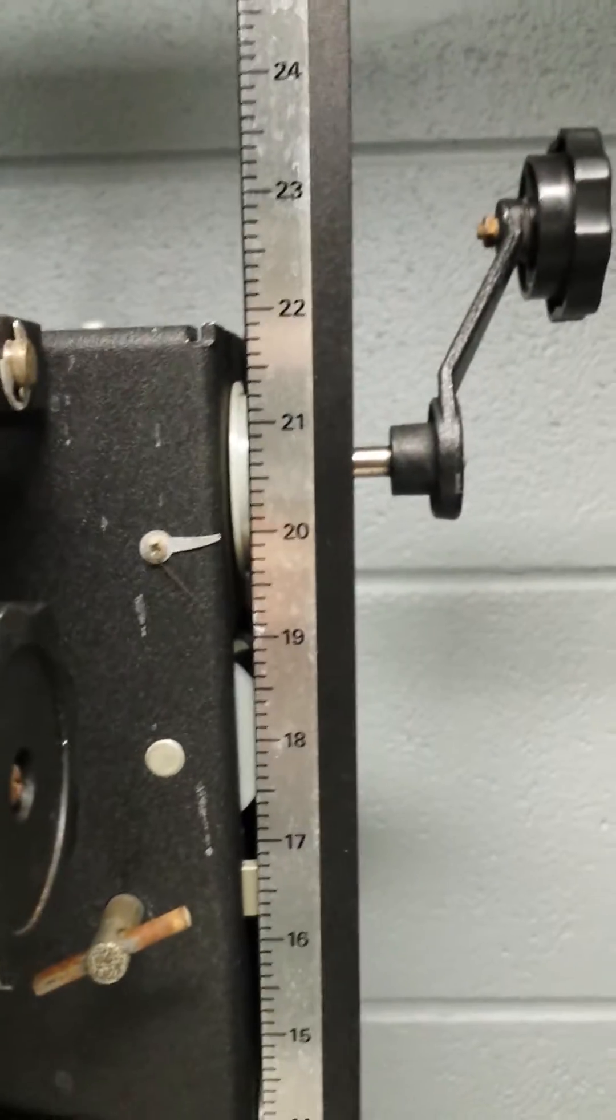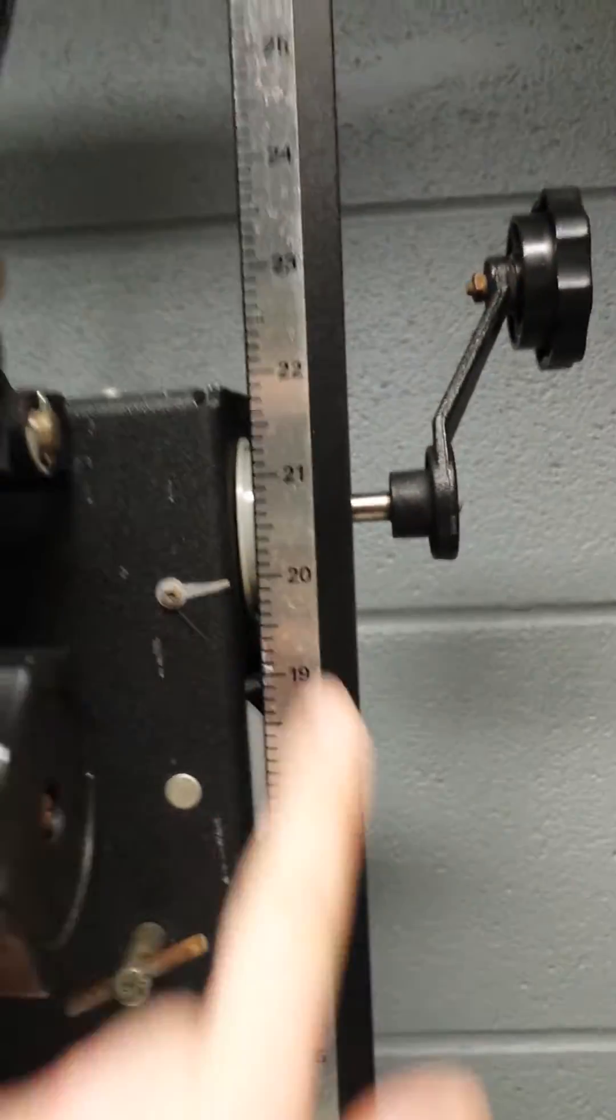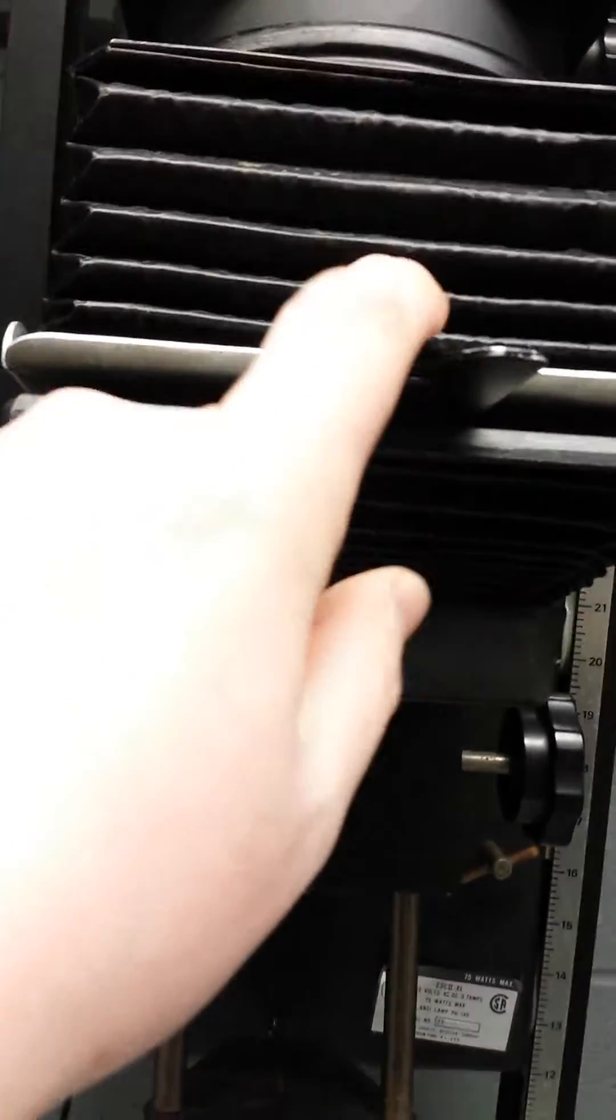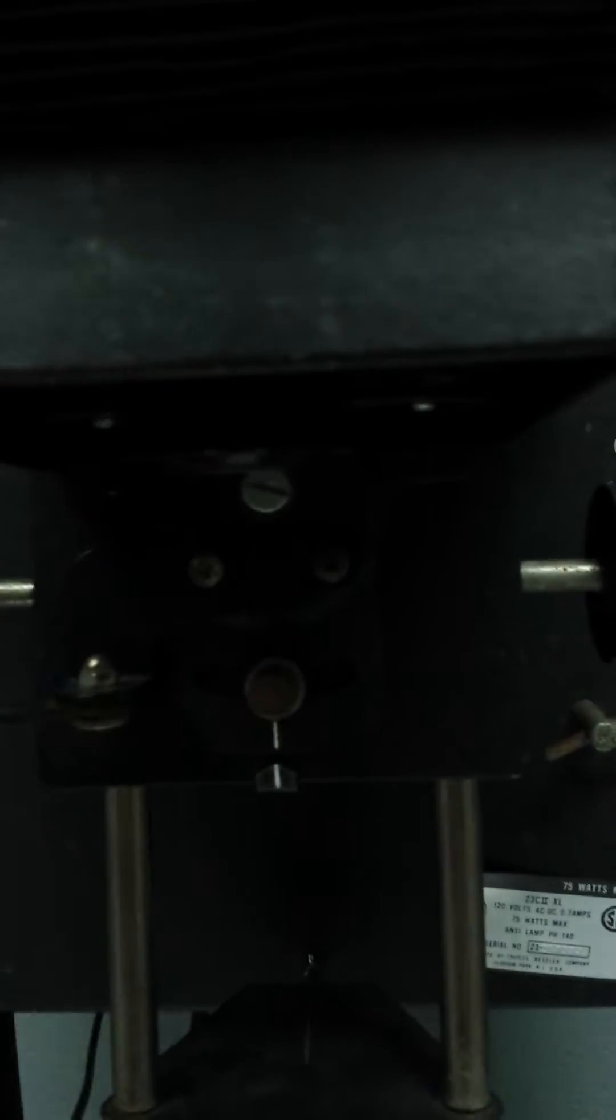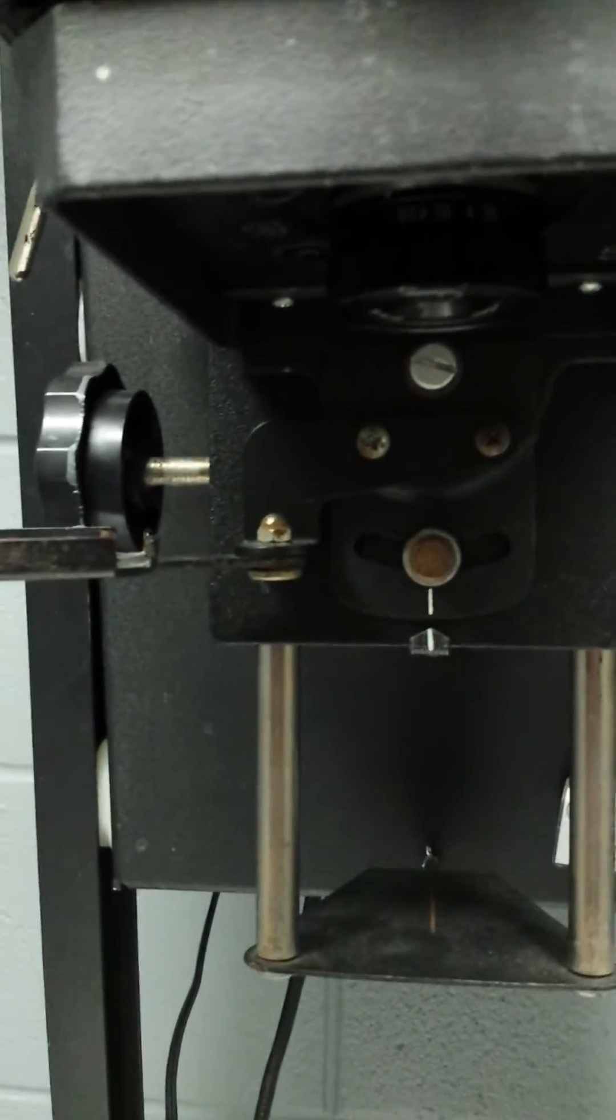So I went ahead and came over to my enlarger and I made sure it was set to 20, which it is. And I have, of course, my empty negative carrier in the enlarger already. And I already preset my aperture to the dimmest setting. So I'm good to go on all those fronts.